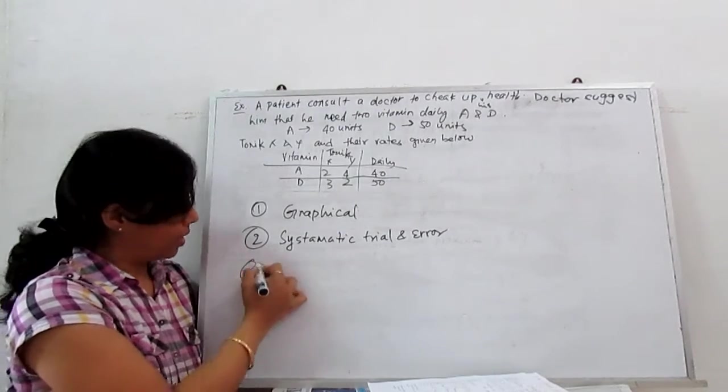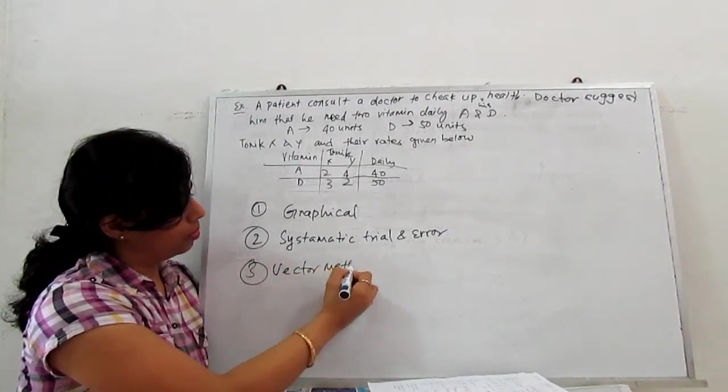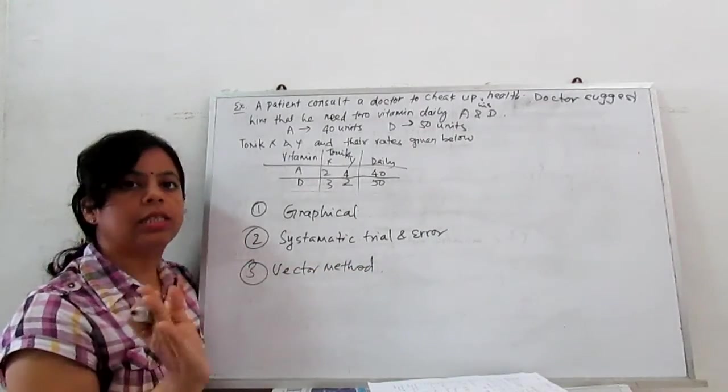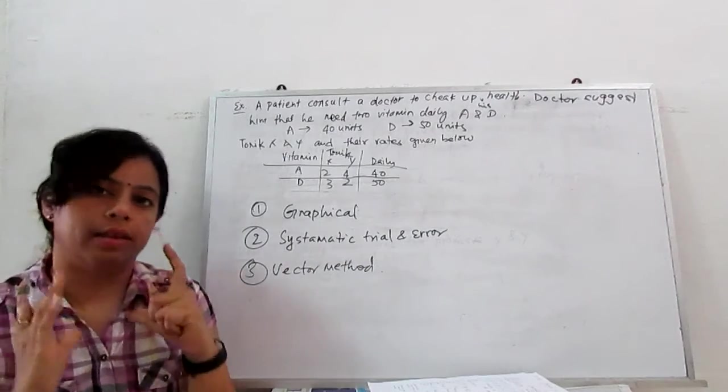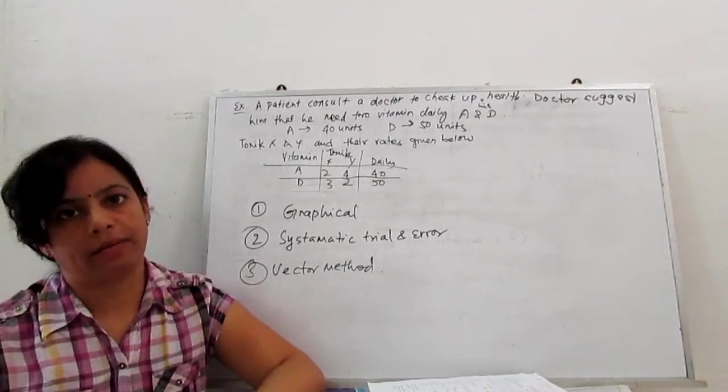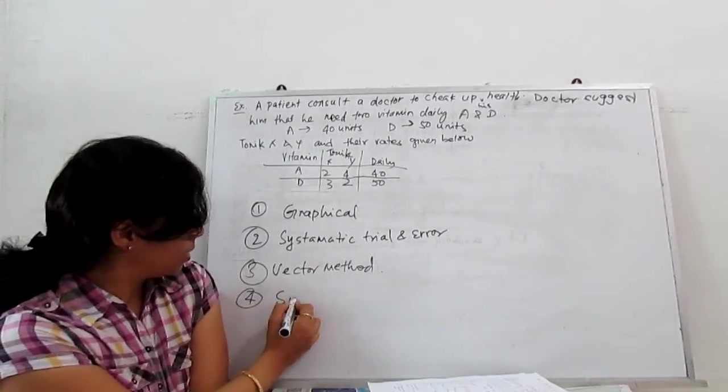Third one is the vector method. For this vector method we consider each decision variable as a vector and we apply vector algebra to solve that problem.